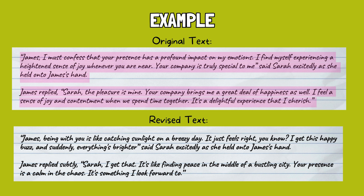Sarah, a free-spirited artist, uses more casual and expressive language, while James, a reserved accountant, communicates with a measured tone. Additionally, the author eliminates unnecessary repetition by condensing the conversation, keeping only the most essential and impactful lines.